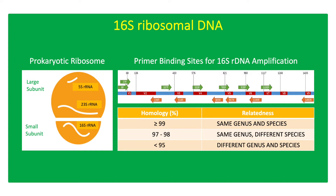The use of PCR to amplify 16S rDNA employs universal PCR primers in the conserved region, which can identify all kinds of bacteria present in the sample, and PCR-specific primers based on the variable region, which can identify bacteria up to species and strain level. Bacterial 16S rDNA has 9 variable regions labeled V1 to V9.